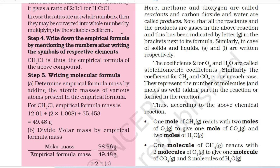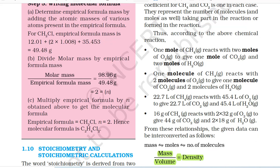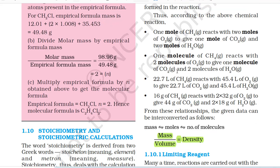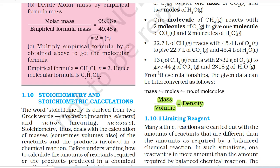The coefficients 2 for O₂ and H₂O are called stoichiometric coefficients. They represent the number of molecules and moles taking part in the reaction or formed in the reaction. Thus, according to the above chemical reaction: one mole of CH₄ reacts with two moles of O₂ to give one mole of CO₂ and two moles of H₂O. One molecule of CH₄ reacts with two molecules of O₂ to give one molecule of CO₂ and two molecules of H₂O. 22.7 litres of CH₄ reacts with 45.4 litres of O₂ to give 22.7 litres of CO₂ and 45.4 litres of H₂O. 16 g of CH₄ reacts with 2 × 32 g of O₂ to give 44 g of CO₂ and 2 × 18 g of H₂O.